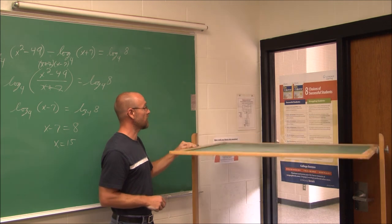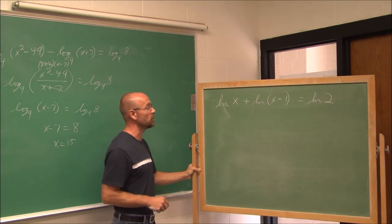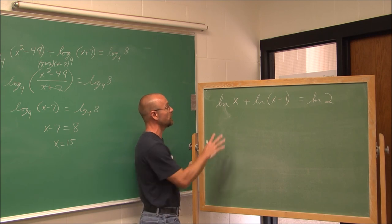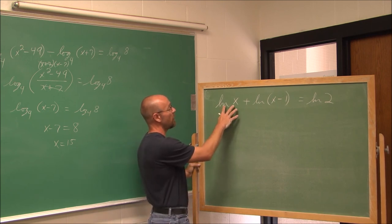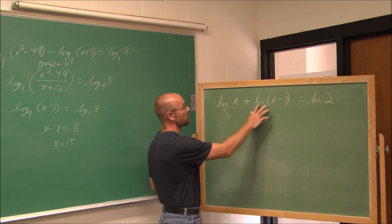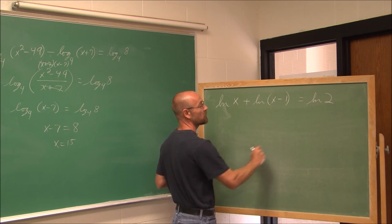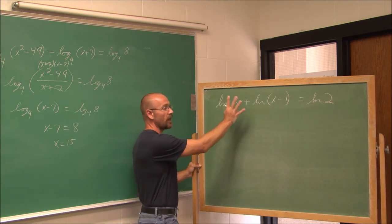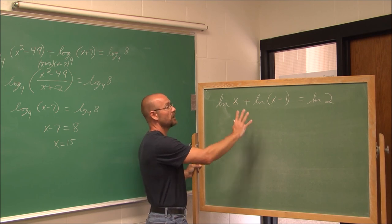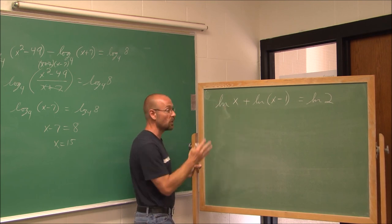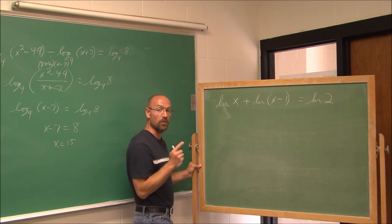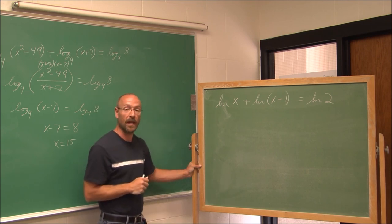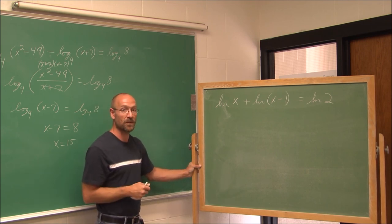One last example for you to do: ln(x) + ln(x−1) = ln(2). This is a combination of the last two examples. Write it as a single logarithm and set the arguments equal. Solve it and make sure you check your work. This has been section 8.7 — thank you for watching.